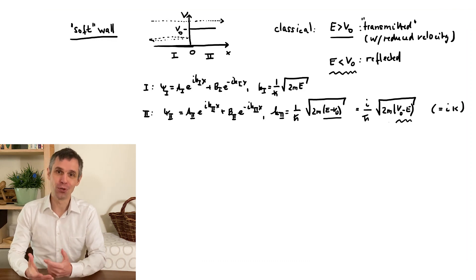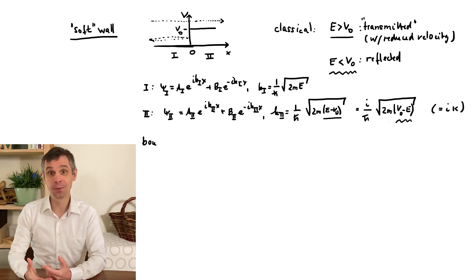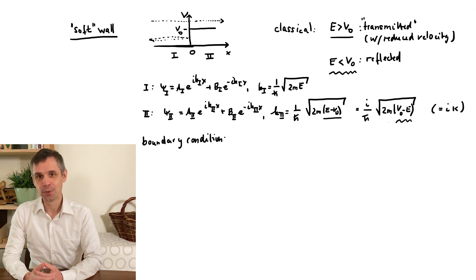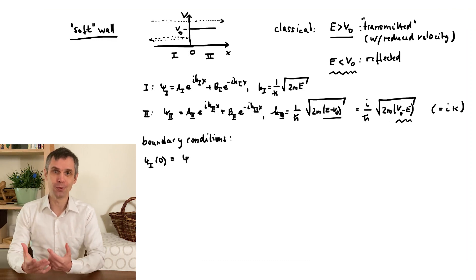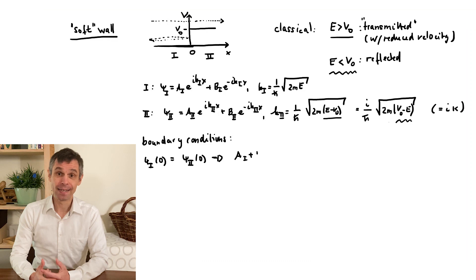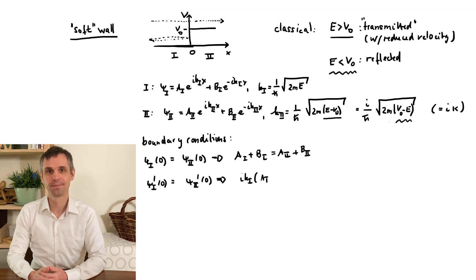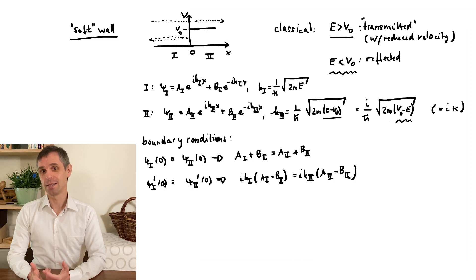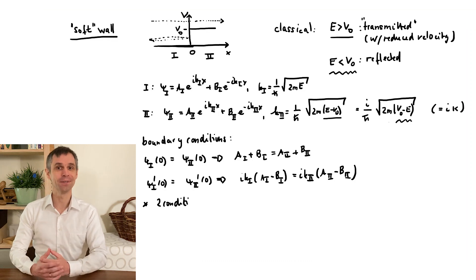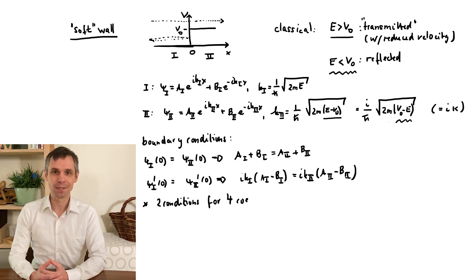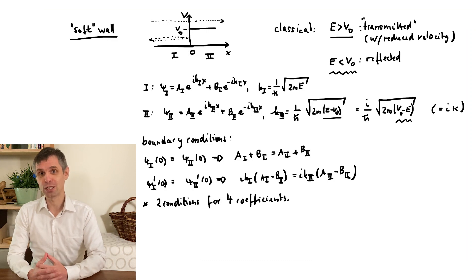So, next we write down the boundary conditions at the point where the two regions meet. These are really the consequence of our general continuity condition. And as the potential is now finite, we need to require this both for the wave function as well as its derivative. These are now two conditions for four coefficients. This gives us some relations but isn't very restrictive.